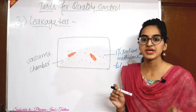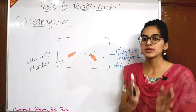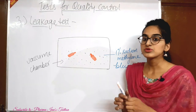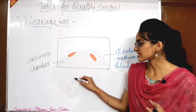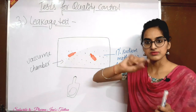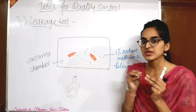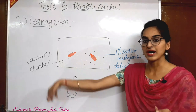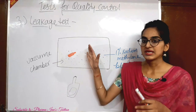Next is the leakage test. We test that there is no leakage in the vials or ampoules. Whatever sterile preparation we have made is filled into vials or ampoules. After filling, we melt and seal them using the fusion method. We then test that the seal is intact — if there is leakage, contamination can enter and the preparation could become contaminated with air. That is why we do the leakage test.